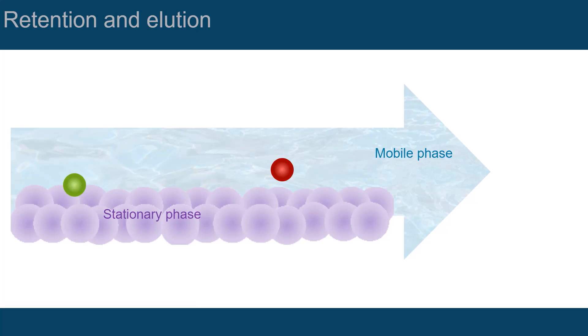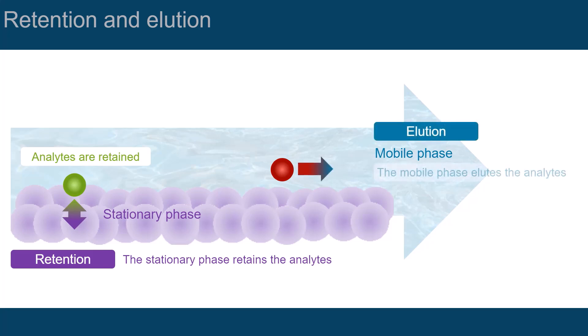Let's now summarize the function of the different actors in LC separation and reflect on the terminology used to describe their roles. The task of the stationary phase is retention. You can also say that it retains the analytes, or that the analytes are retained. The function of the mobile phase is elution. It elutes the analytes, or the analytes are eluted.